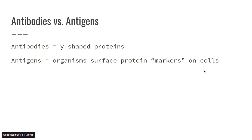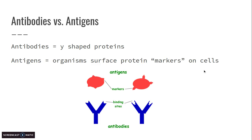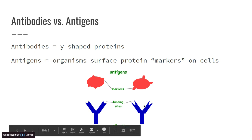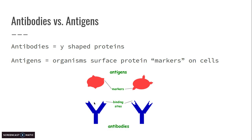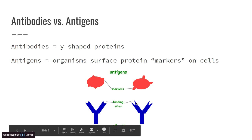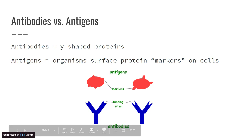We're going to talk about the difference between antibodies and antigens. This will make more sense when we talk about types of blood cells, but essentially antibodies are Y-shaped proteins. Antigens are these guys right here that have special markers that match the antibodies — so this matches this and this matches this. Please keep that in mind as we go through this video.